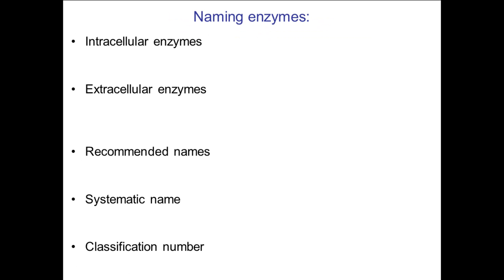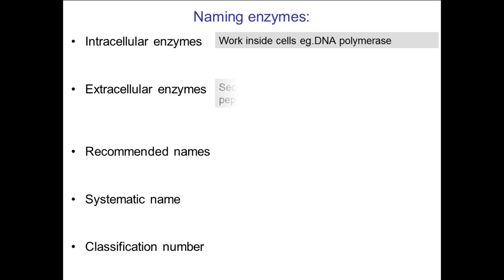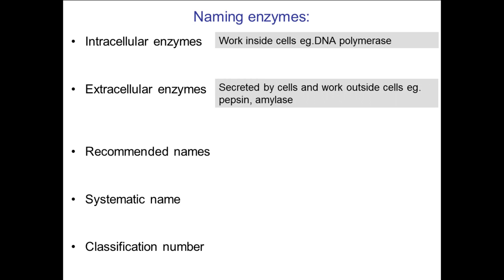There are some other types of terms that you might need to know. Intracellular enzymes are enzymes that work inside cells — an example of that might be polymerase, which forms DNA. An extracellular enzyme works outside of cells, such as pepsin and amylase, which work in the mouth and in the small intestine.